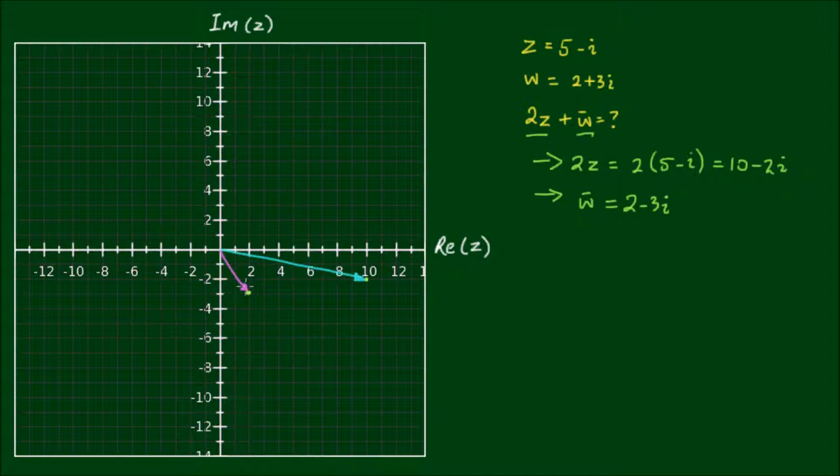Now the addition of two complex numbers is exactly the same process as addition of vectors. So here's the vector 2z, and here is the vector w bar. And complex number addition is exactly the same as vector addition.